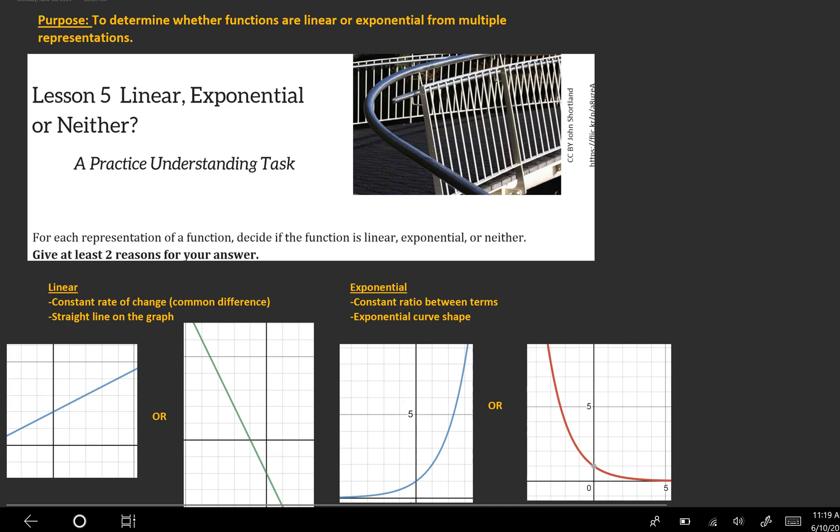To recap, some main ways to tell a function is linear: it has a constant rate of change, which is the number one way. You can tell by seeing a straight line on the graph, a constant difference between terms in the table, or in a verbal description there would be some kind of description that indicates constant rate of change, such as 'Timmy works making seven dollars an hour.' So you have graphs that look like this - straight lines going up or down.